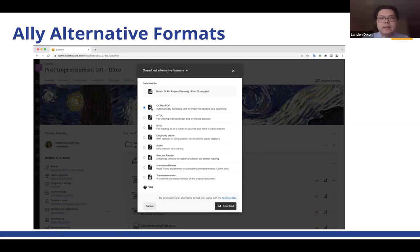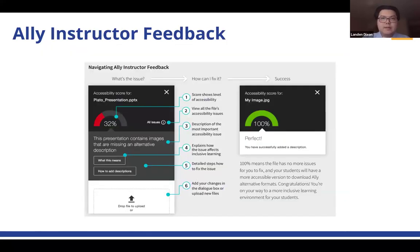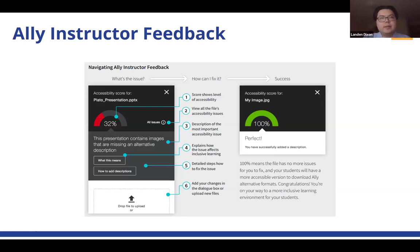It's great that Ally has an impact without the instructor changing a thing with alternative formats, but we also want to be forward thinking and have the course content be more accessible to begin with. It is for this reason that Ally provides instructor feedback as well. For each file, Ally tells instructors what the accessibility issues are, explains how these issues affect inclusive learning, describes steps on how to fix the issues, provides an easy upload for the corrected version, and also gamifies instructor feedback by providing an accessibility score.